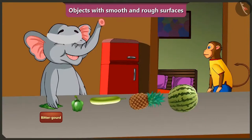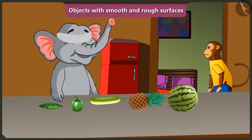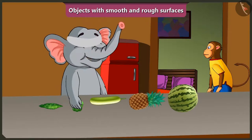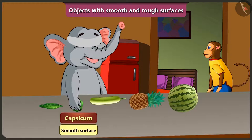This is bitter gourd. It has a rough surface. Mmm, this is capsicum. It has a smooth surface.